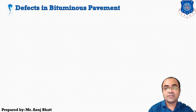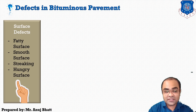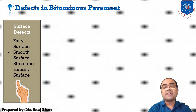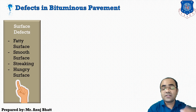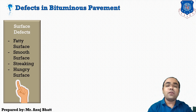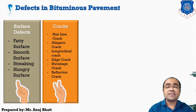The first category is surface defects. Surface defects include the fatty surface, the smooth surface, streaking, and the hungry surface. These are the sub-types of surface defects that are generally examined on a particular pavement surface.